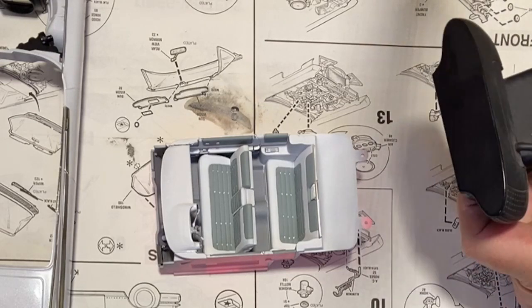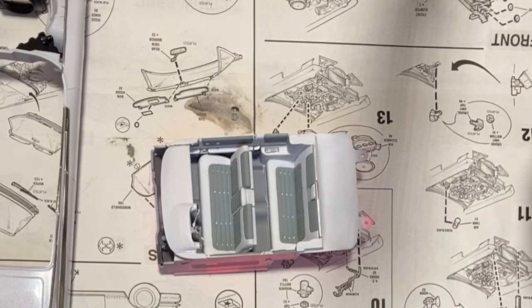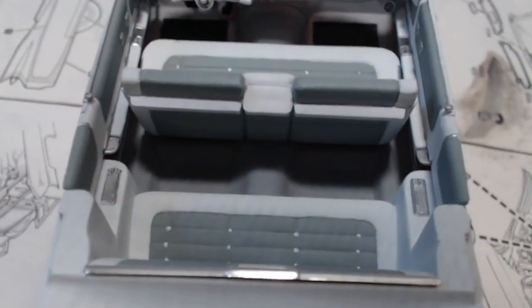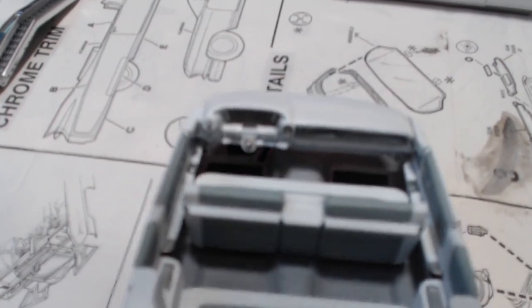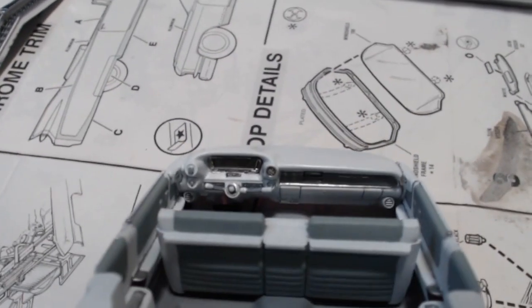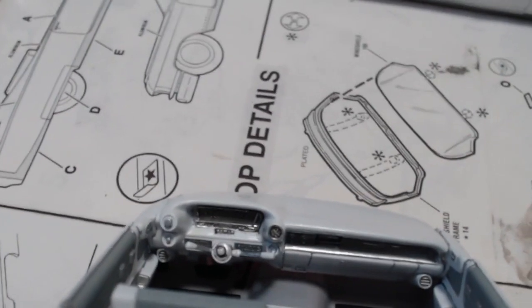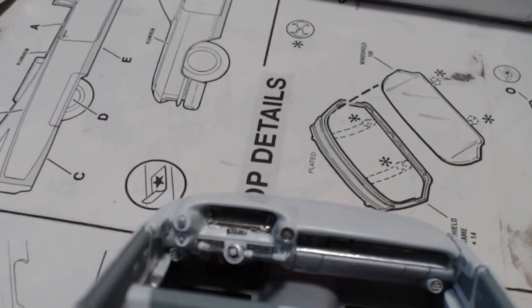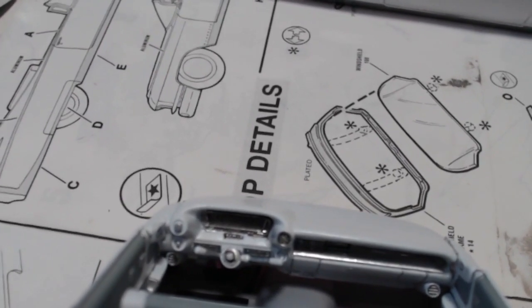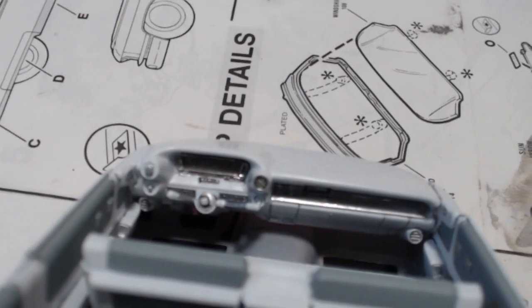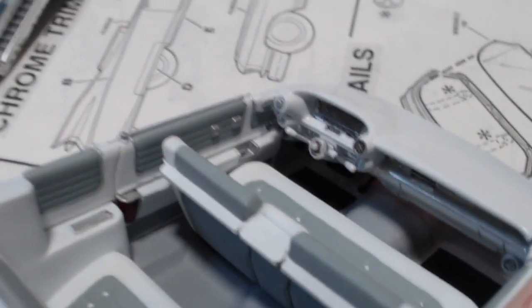There's the interior. There we go, focusing. This dashboard is all done. I used Tamiya flat panel black, not flat black, panel black, to do the dash and that was over Molotov chrome.